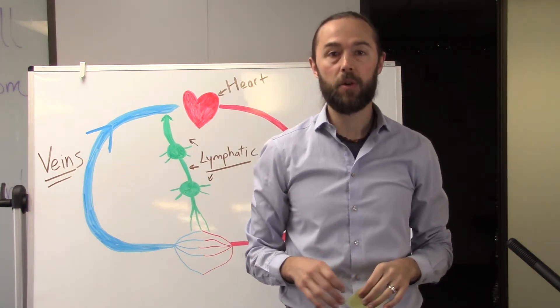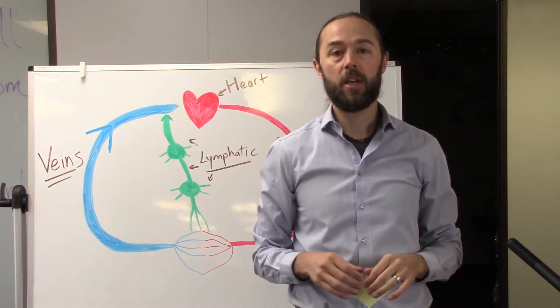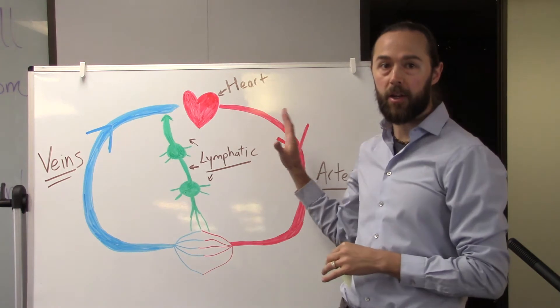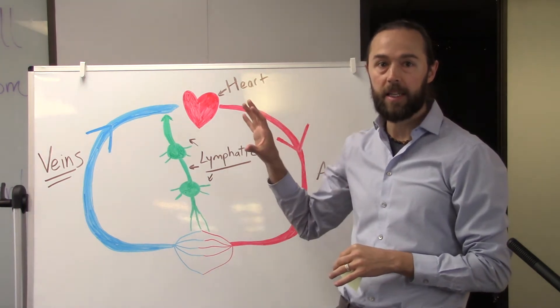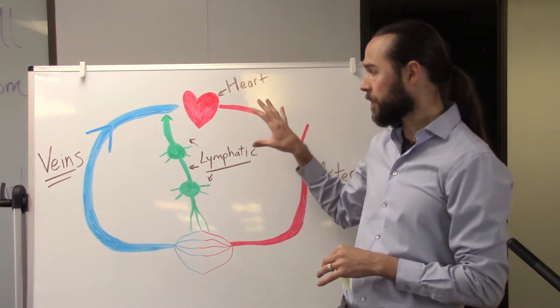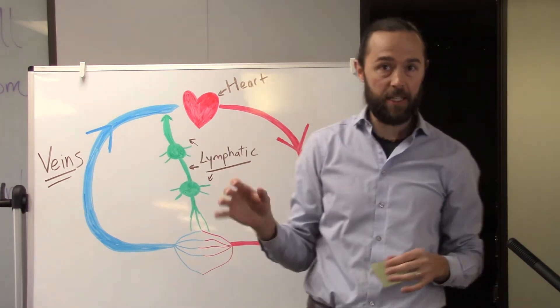If you didn't catch the first video or the first blog post in this series, go ahead and check that one out first. In that we covered this drawing here that explains the role of the heart, veins, arteries, and your lymphatic system and how they're related to each other.